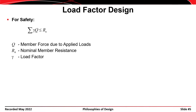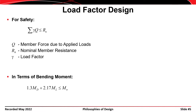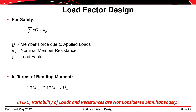The second approach is load factor design. For safety, the sum of gamma times Q must be less than or equal to R sub n, where gamma is a load factor, Q is a member force due to the applied loads, and R sub n is a nominal member resistance. In terms of bending moment, we separate out the dead load moment and the live load moment and apply different load factors to those actions, since dead load is more predictable than live load.